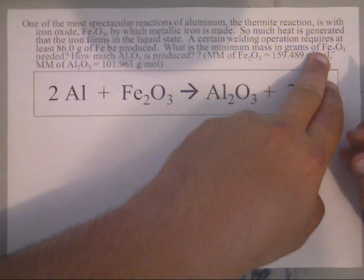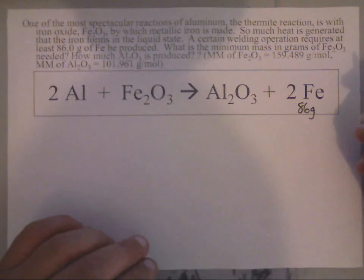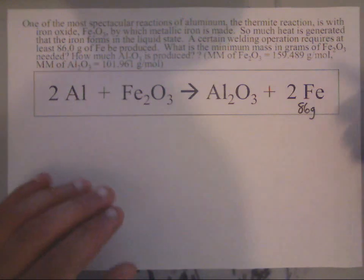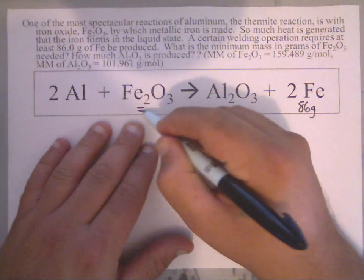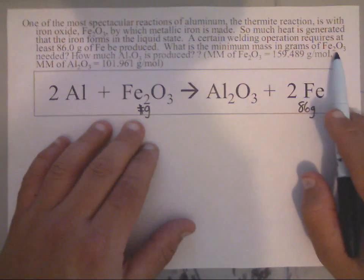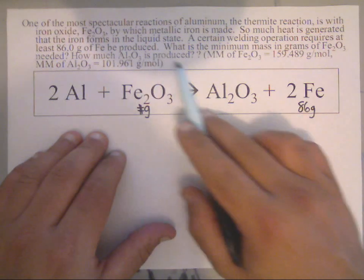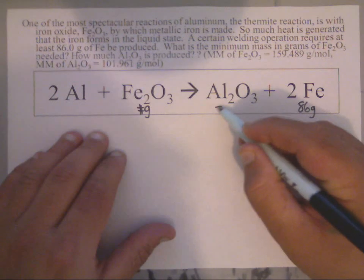So I'm going to label 86 grams of Fe there, and they want to know what is the minimum mass in grams of Fe2O3, which is iron 3 oxide, needed. And then they also ask how much Al2O3 is produced.